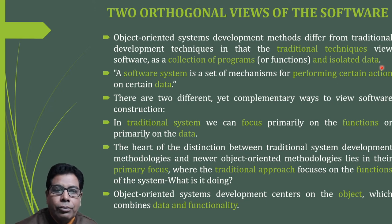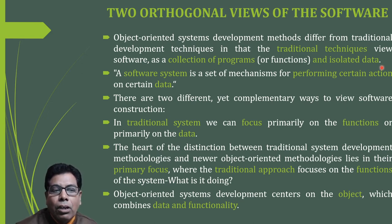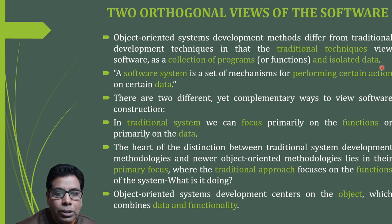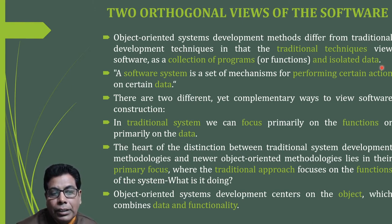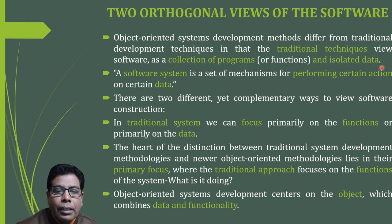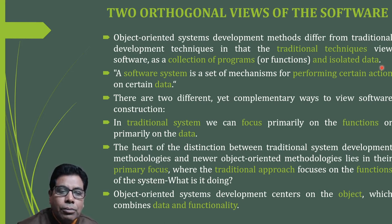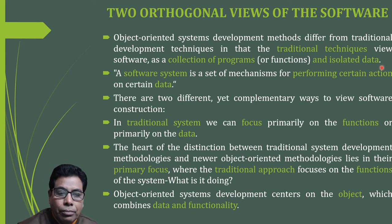A software system is a set of mechanisms for performing certain actions on certain data. In traditional systems, we can focus primarily on functions or primarily on data — these are two complementary views. The traditional approach focuses on functions of the system, particularly algorithms, as the main focus. Whereas in object oriented system development, the focus centers on objects which combine data and functionalities.